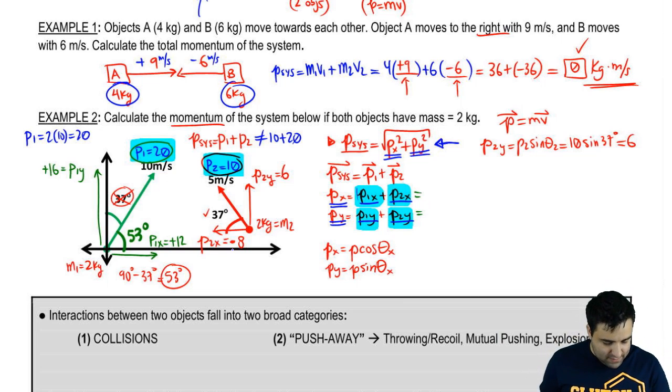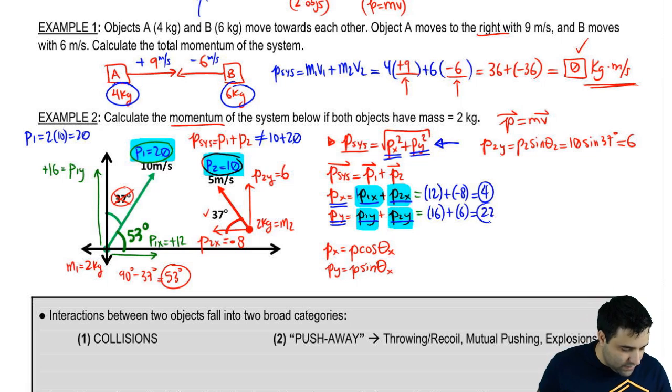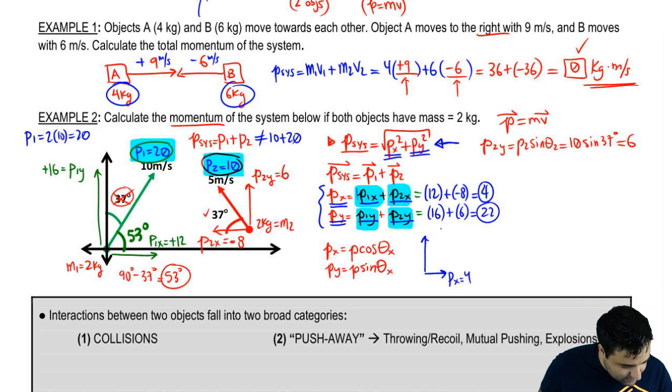So P1x is positive 12. P2x is negative 8. This adds up to 4. And the y's are 6 and 16. So 16 is the first one and 6 is the other. This gives you 22. Once you know this, once you know the Px total and the Py total, you can actually draw this out. And it kind of looks like this. In the x-axis, it's a 4. So Px is a 4. On the y-axis, it is a 22. So that's what it looks like.